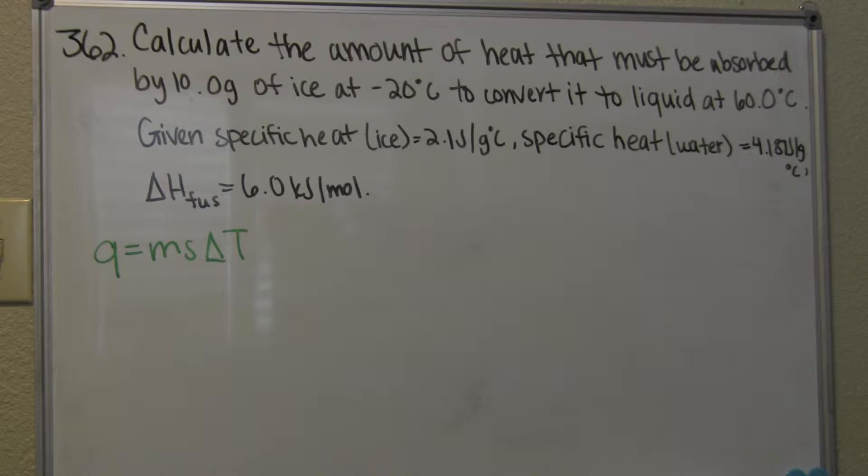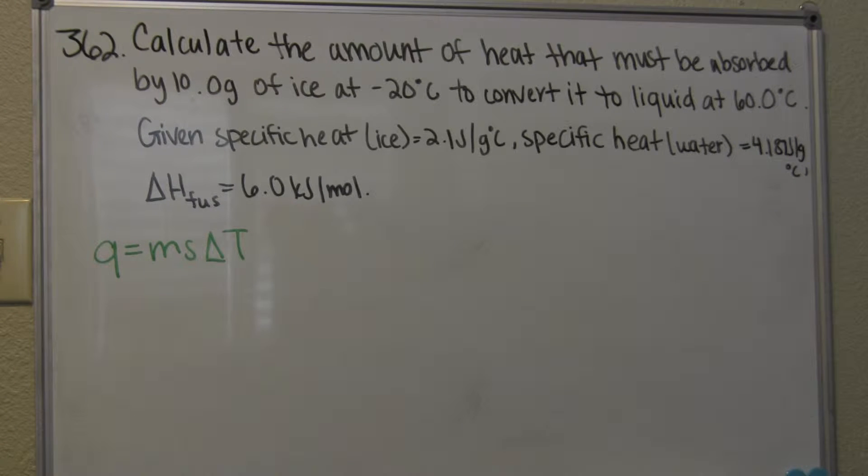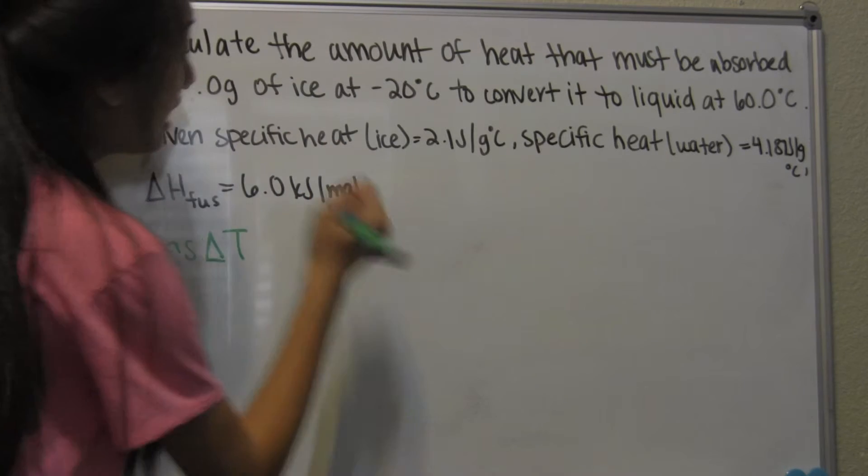Since we have Q ice, and it's trying to get to Q water, we have to find out the amount of heat that's being absorbed through ice, water, and through its melting, which is the latent heat of melting. The first thing that we're going to do is find the heat of ice.